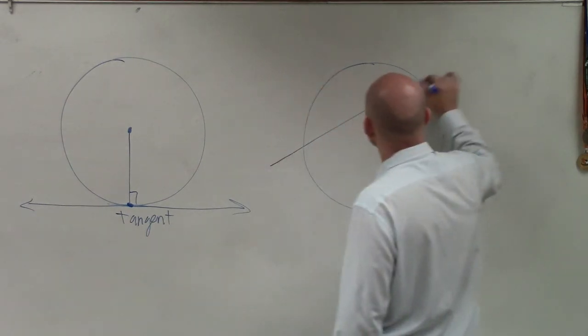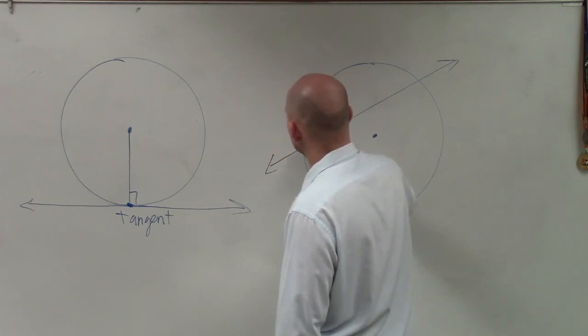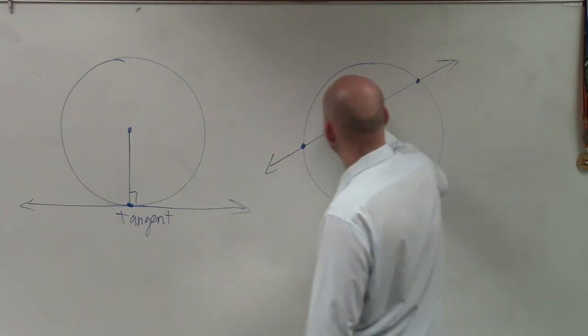If a line intersects a circle twice, that is what we call a line of secant.